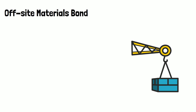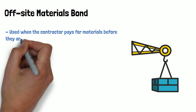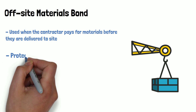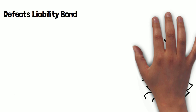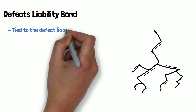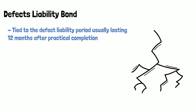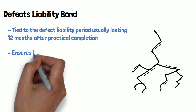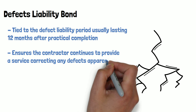Off-site material bond. This is similar to the advance payment bond. Sometimes the contractor pays for materials before they are delivered to site, and this bond is used to protect the programme against delays. Defects liability bond. This bond is tied to the defect liability period, usually lasting 12 months after practical completion, and ensures the contractor provides a service correcting any defects apparent after completion of works.